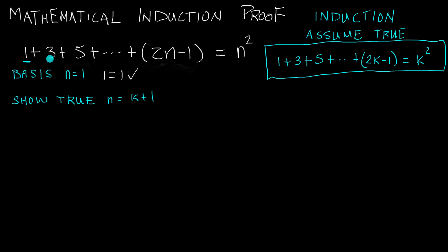Then n equals 2 could be our k, which means if we can show it's true for n equals k plus 1, then we've proved the n equals 3 case, and so on and so forth. Showing the basis case works, assuming it's true for any k, and then based on that assumption showing it's true for the next case — we've proved this is true for any n, assuming n is an integer with value 1 or greater.